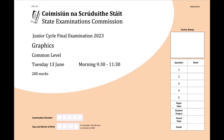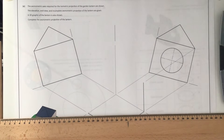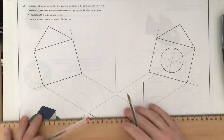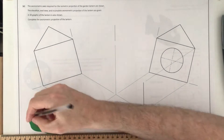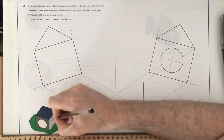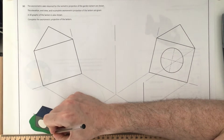We're back again with another junior cycle 2023 exam question, moving on to question four part E. This is our axonometric isometric question. It's a straightforward enough question; the only thing we really have to be concerned about is that circle on the front surface.